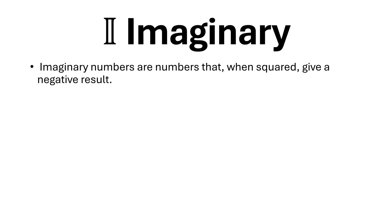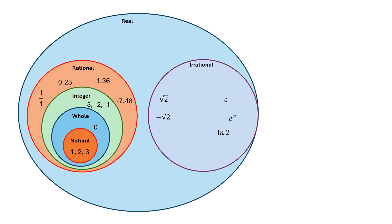Imaginary numbers are numbers that when squared give a negative result. The imaginary unit is denoted by i, where i is the square root of -1. For example, i, 2i, 3i.